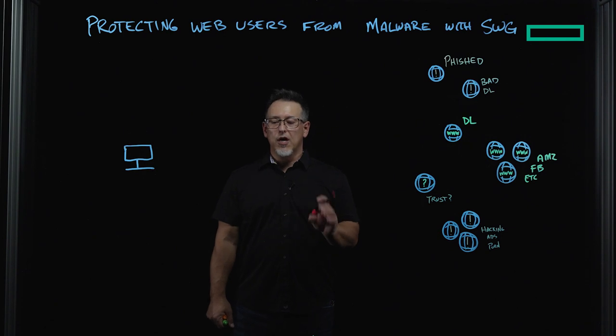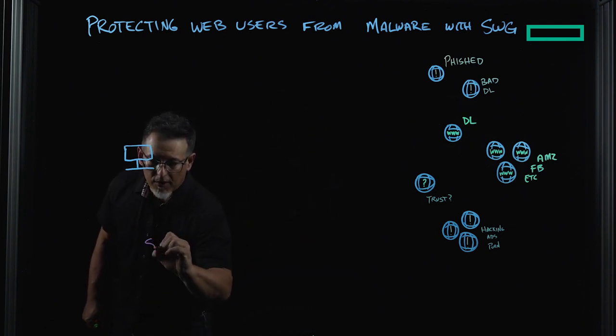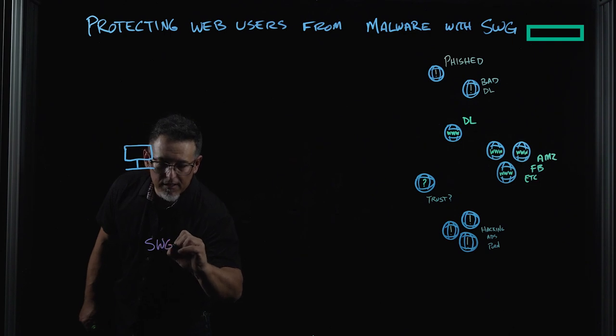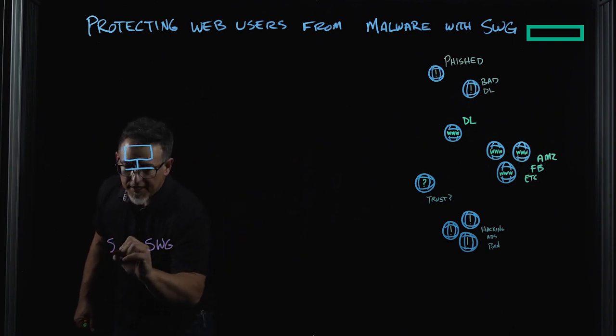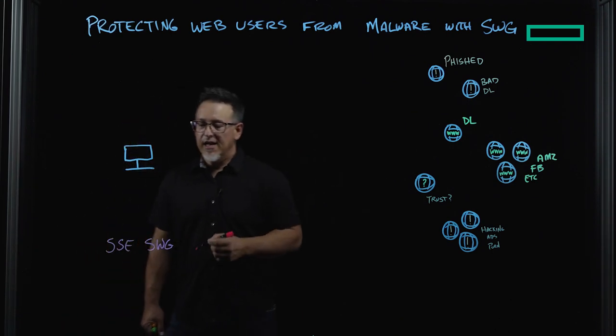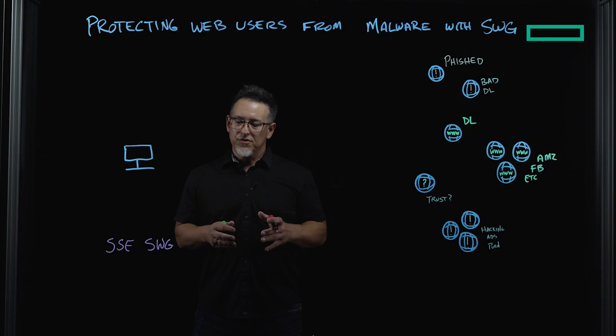To start off with, I want to cover a couple of terms first. First, secure web gateway, or SWG, is an integral part of something called Security Service Edge, or SSE. SSE SWG is a set of cloud-based security tools that will help protect your business and your users from malware and other threats on the internet.